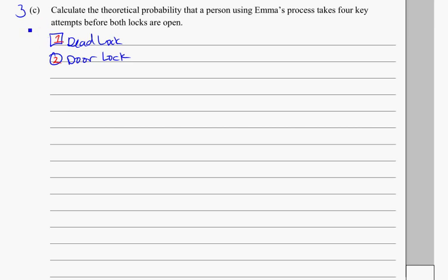And the way she does it is that she's got six keys, she tries all six of them on the deadlock until she finds the right one, and then she takes that one out and goes on to the door lock, so at that point she'll have five keys to try on the door lock.